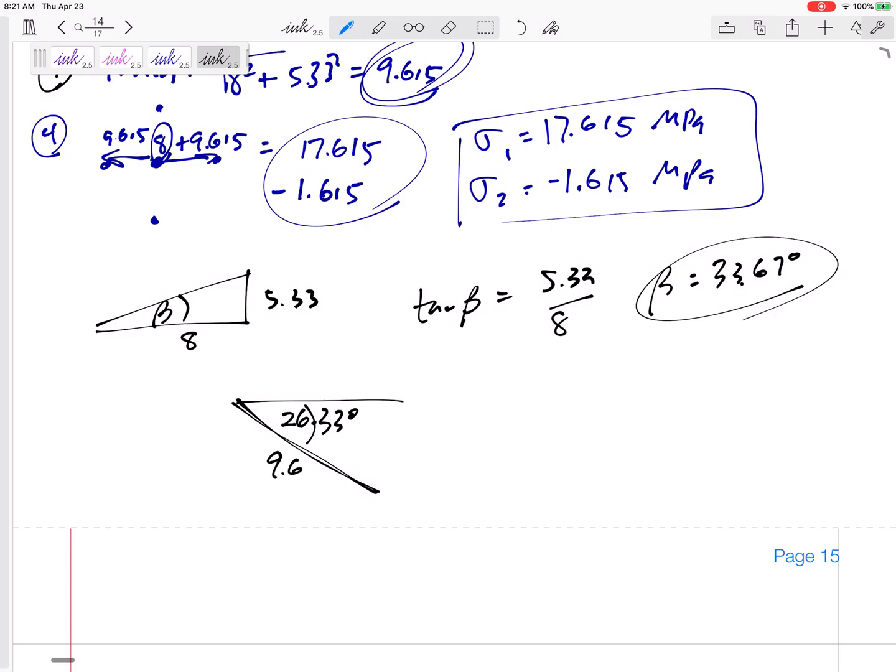So if I want to know in real life 30 degrees clockwise, then on Mohr's circle I need to go 60 degrees clockwise. So if I am 33.67 above the horizontal and I rotate 60 degrees clockwise, I'm going to end up at 60 minus 33.67, I'm going to end up at 26.33 degrees below horizontal. So here's where I'm ending up. I'm below horizontal. I am on Mohr's circle 26.33 degrees below horizontal. And my radius is still 9.615.